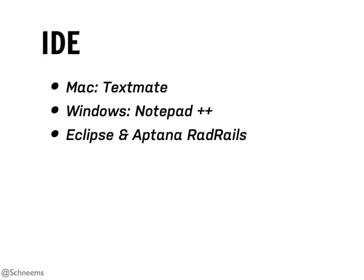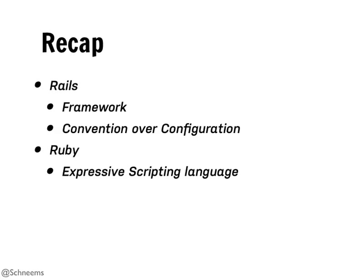Another common question is how do you write Ruby and Rails. I personally use TextMate for Mac. I've also used Notepad++ if you have a Windows machine, or Eclipse with the Aptana Rad Rails plugin. Someone mentioned they were using RubyMine earlier - that's commercially available but has a free trial. Feel free to talk to one another - if you end up loving RubyMine, try to show it off.